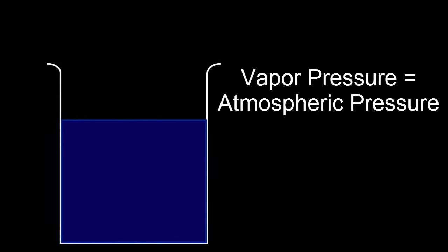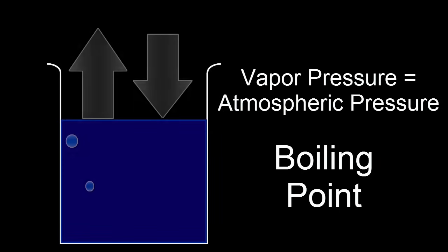We can make boiling happen by either increasing the vapor pressure or decreasing the atmospheric pressure. Either way, once the vapor pressure and the atmospheric pressure are equal, we've reached the boiling point, and boiling can begin.